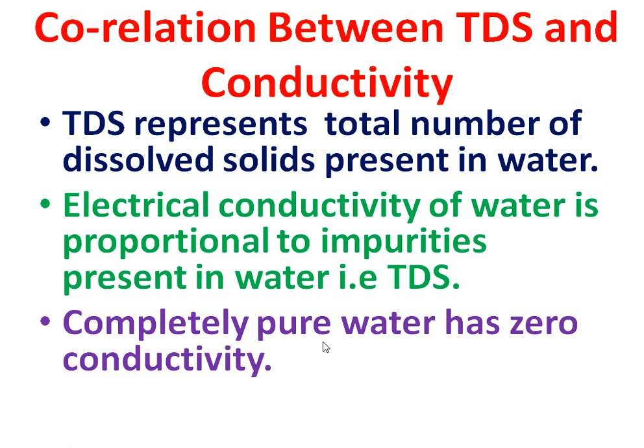Completely pure water has zero conductivity, because in completely pure water there are no free ions. So if there are no ions, then this water has zero conductivity.